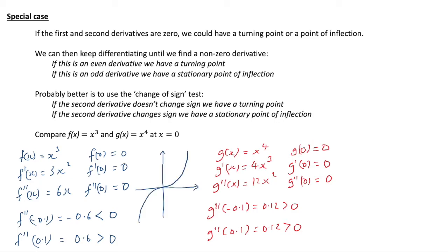Looking at the graphs: x³ has a stationary point of inflection at 0, predicted by the second derivative changing sign. Whereas x⁴ has a minimum at 0, and the sign of the second derivative didn't change. The fact that the second derivative was greater than 0 also points towards a minimum, because the function is going upwards.